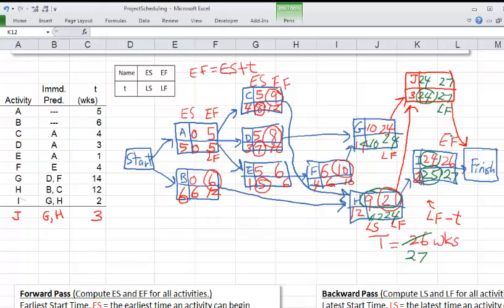So here the important thing to remember is that if you have more than one final activity, just remember to choose the total time is going to be the highest LF of the final activities. And that's the number that you will start the backward pass with. This is the number we would put in the bottom of all the final activities in order to start the backward pass.